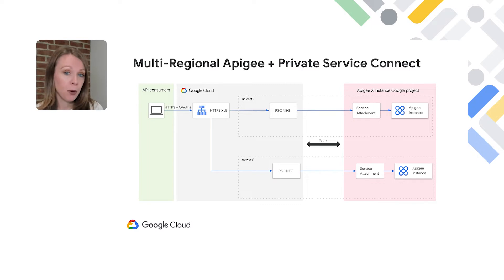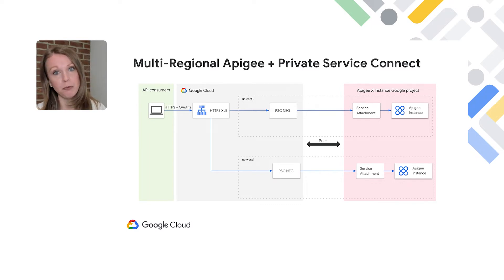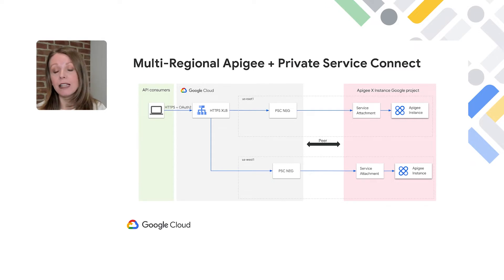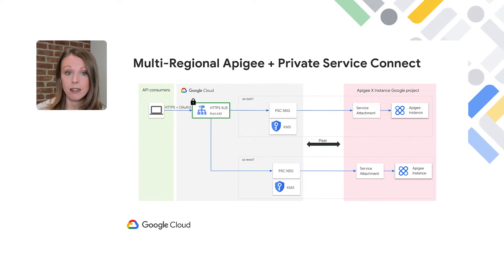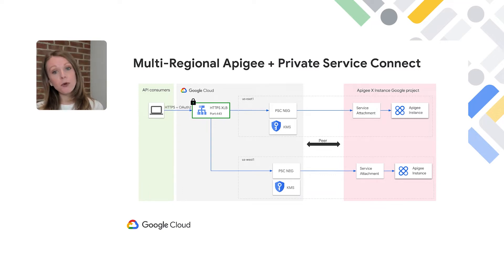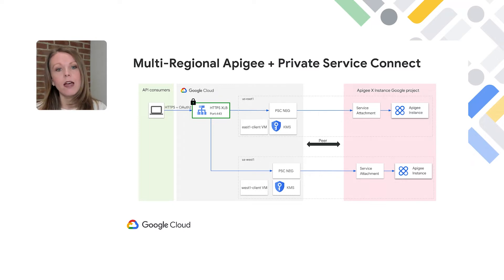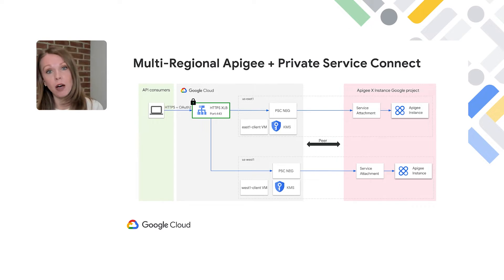As part of the demo, we'll walk through a number of components that have already been built ahead of time. The private service access peering range has already been allocated for Apigee on the default network. KMS has already been set up in the appropriate regions that Apigee will be running in. We have already built the external HTTPS load balancer forwarding rule for port 443, protected by an SSL certificate. Lastly, we have test clients running in the US East 1 and US West 1 regions.